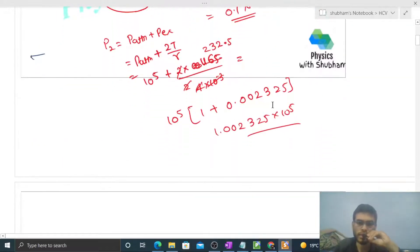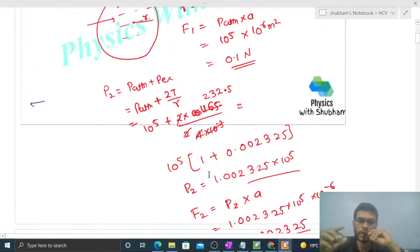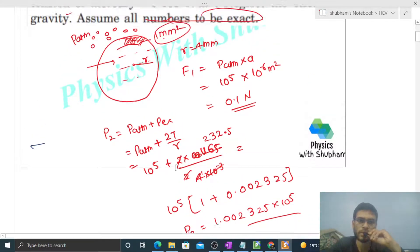And how much force will be applied? F2, that will be simply the pressure into area. So this will be 1.002325 × 10⁵ into area that is 10⁻⁶, so this will be 0.1002325. This will be the value of F2. F2 is the mercury below applying force on this area.